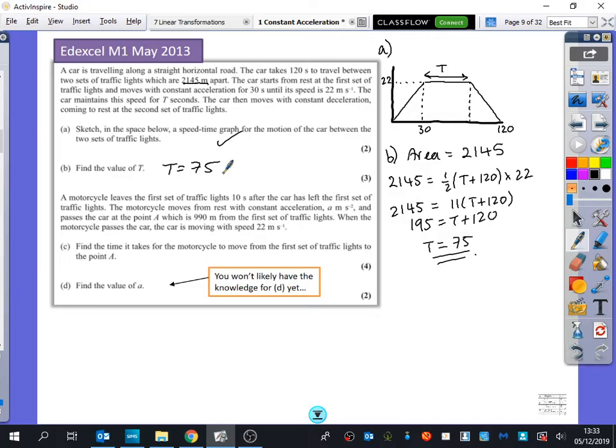This is the part that I knew there would be some difficulty with and it's because it's sort of like a logic kind of reasoning question. I'm sure you were tempted by the question we did at the end of last lesson where we drew two graphs at the same time. This one actually doesn't even require you to draw the second graph of the motorcyclist. It actually says a motorcycle leaves the first set of traffic lights 10 seconds after the car has left the first set of traffic lights. So it started at the same point as the car, but it just left a little bit later. The motorcycle moves from rest with constant acceleration, a meters per second, and passes the car at a point A, which is 990 meters from the first set of traffic lights.